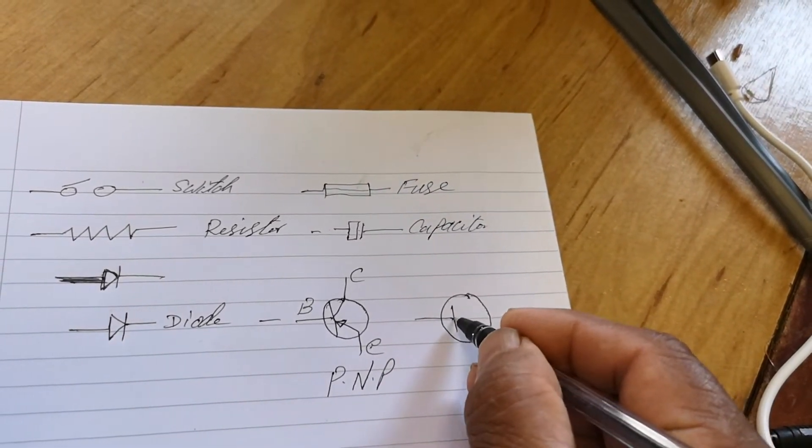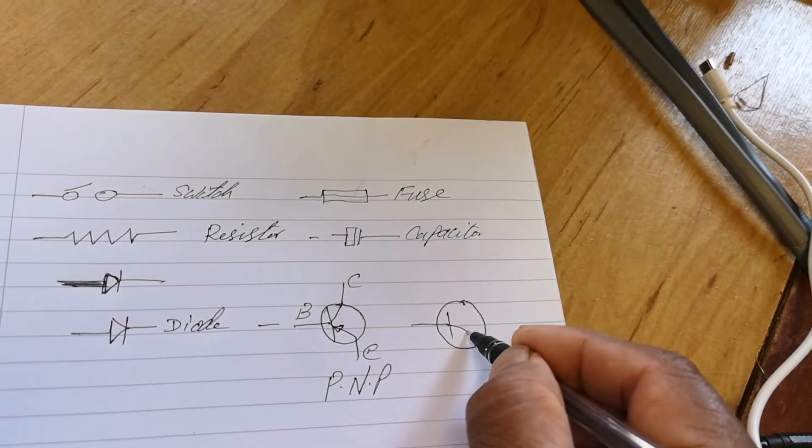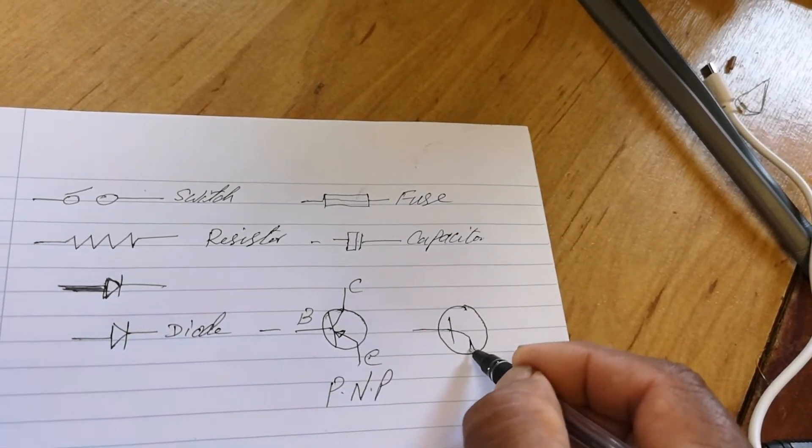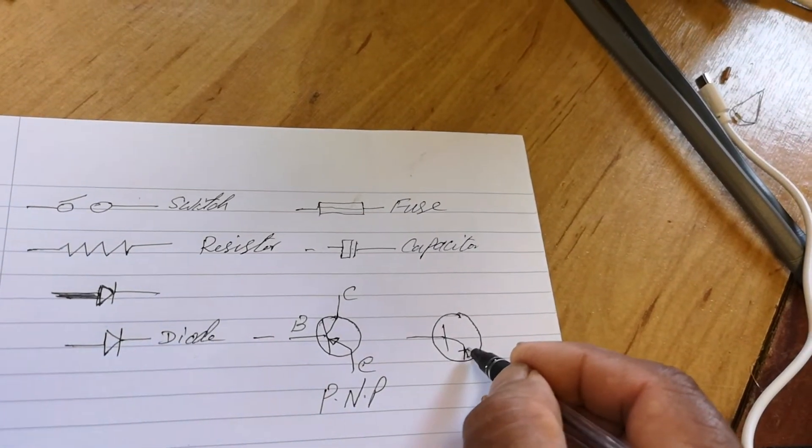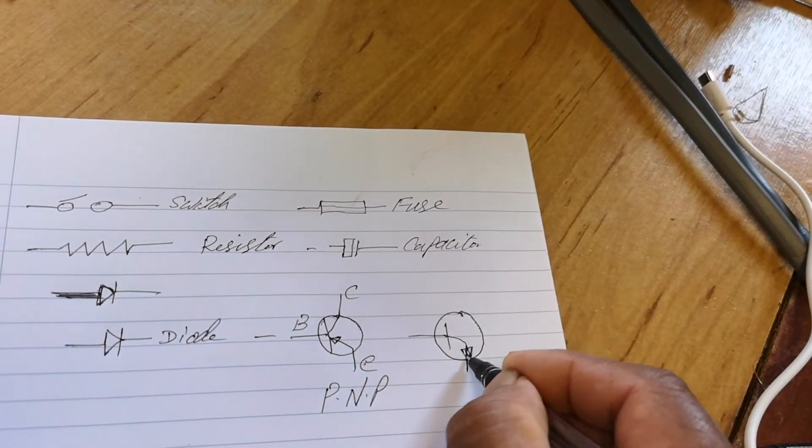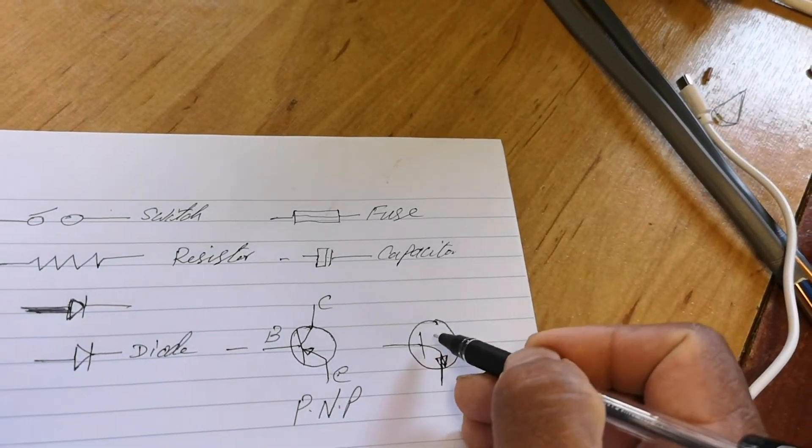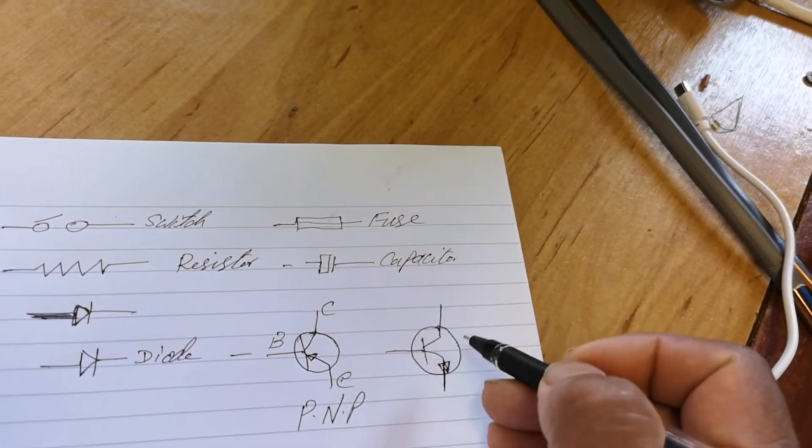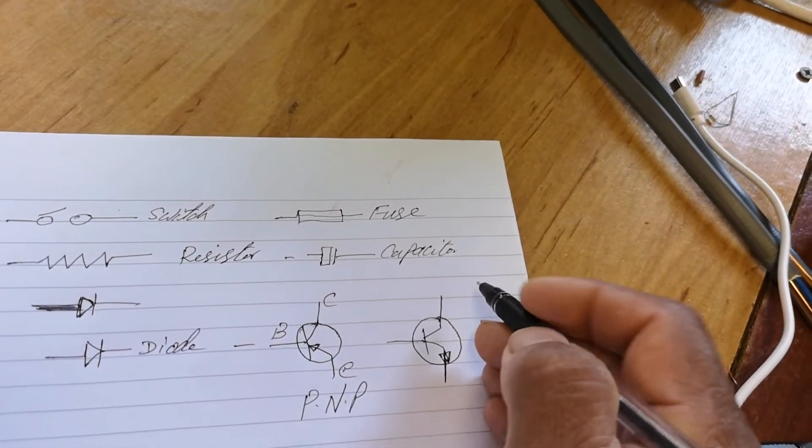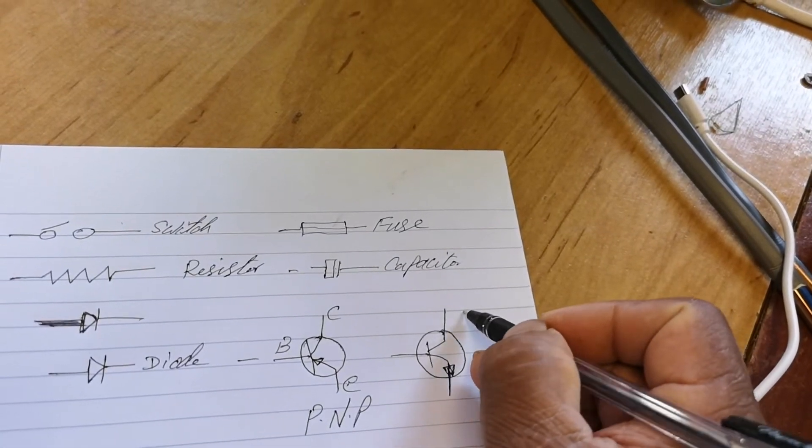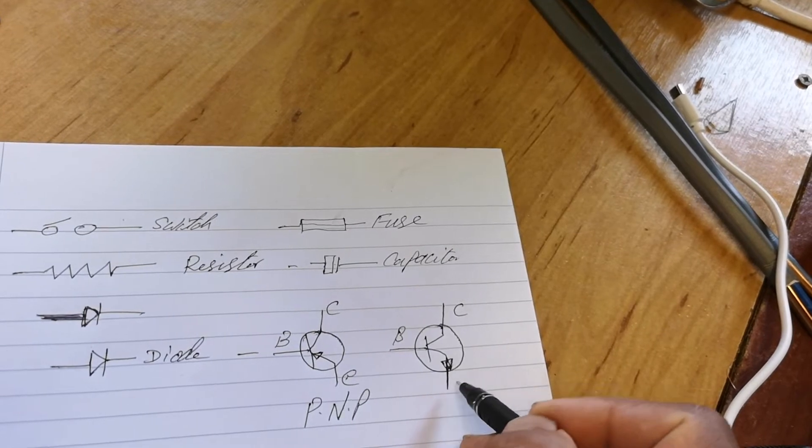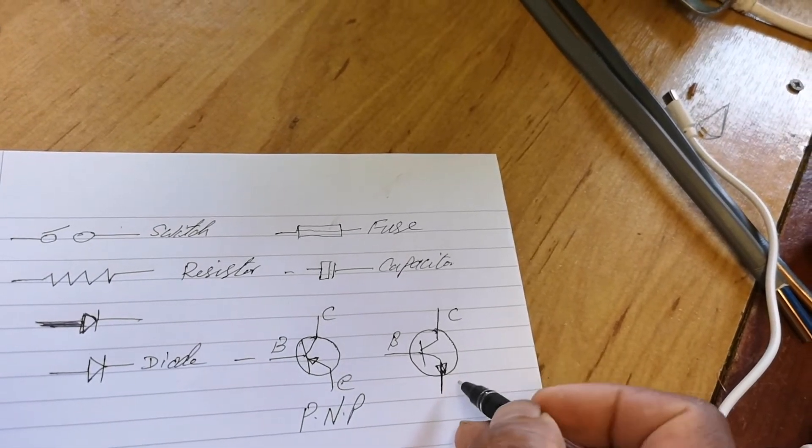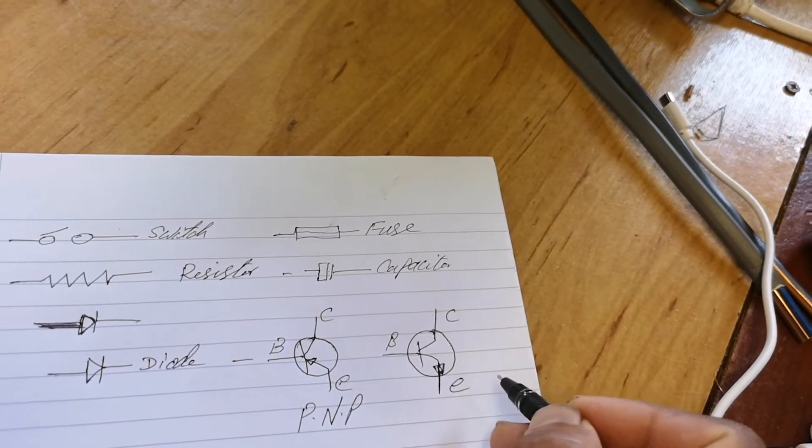And then it's NPN. Okay, this is the arrow is going out. So this is collector, base, and emitter. Emitter.